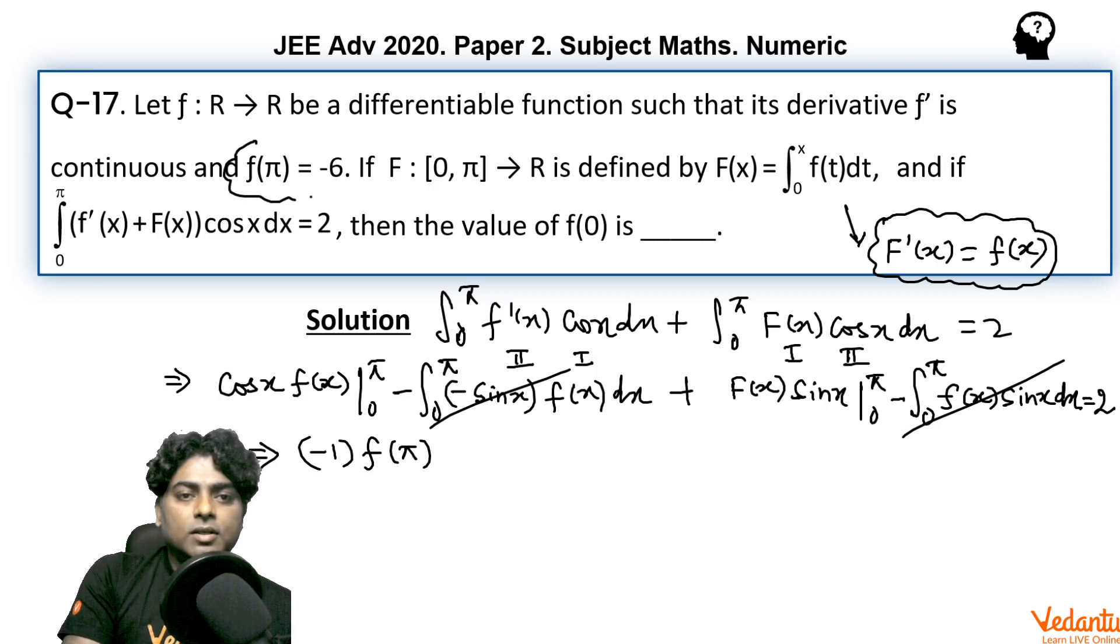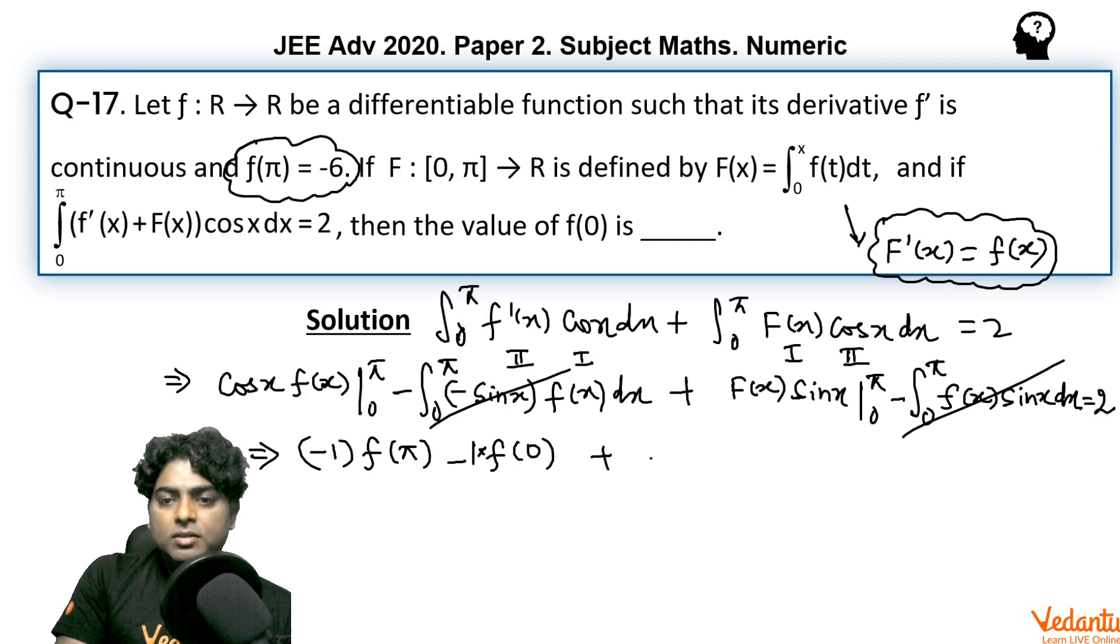Putting the limits: upper limit cos(π) = -1, f(π) which is given in the equation, minus cos(0) = 1 times f(0) which is required, plus F(π)·0 and F(0)·0.